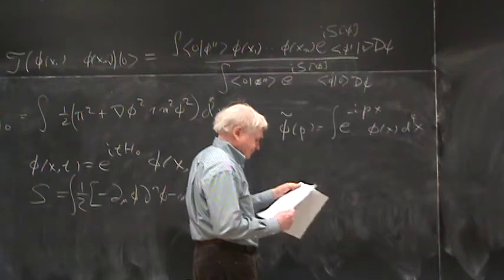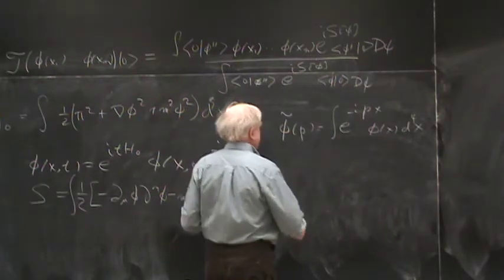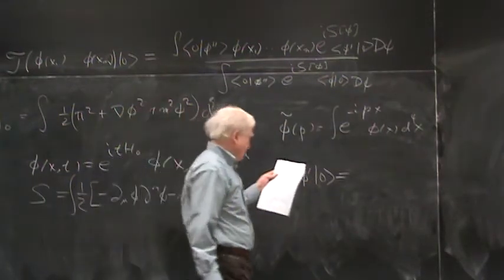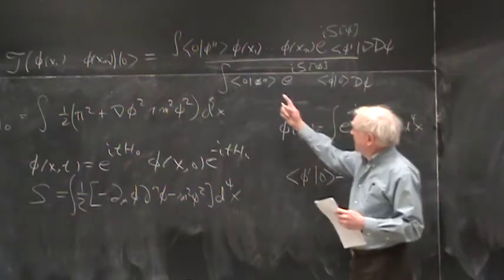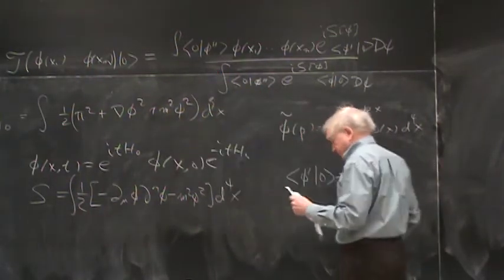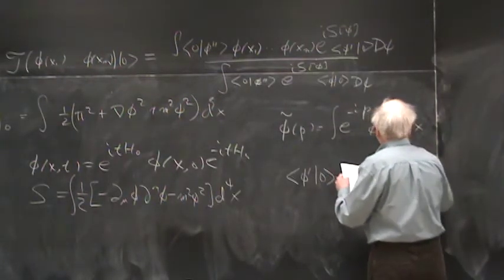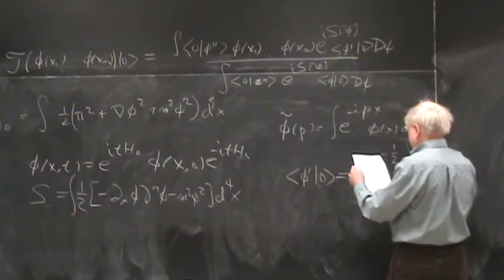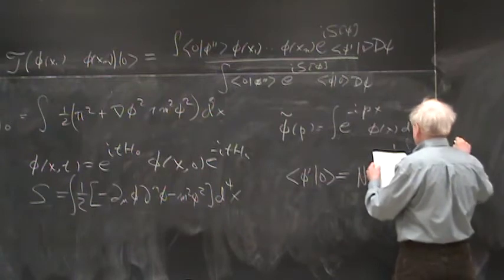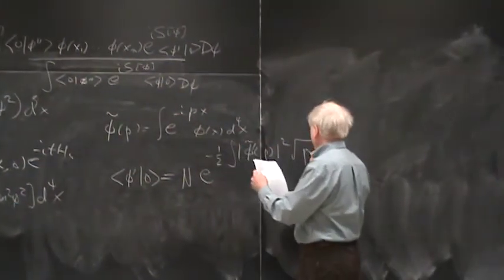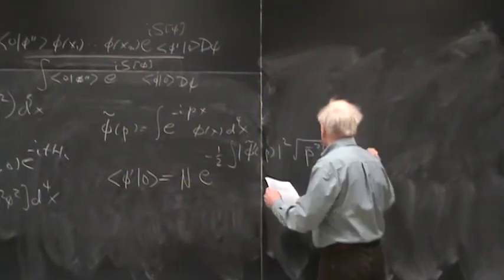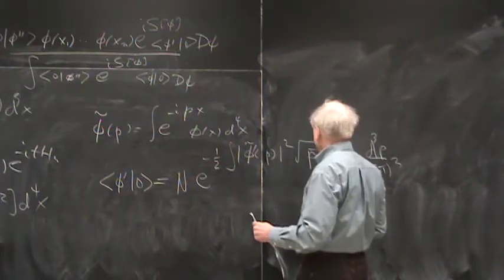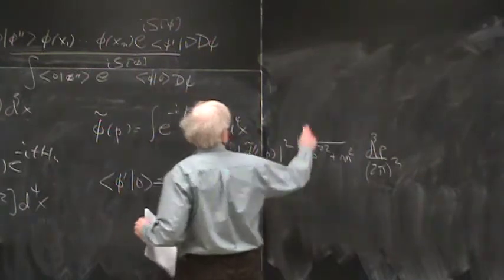What we next did was we made use of something I derived in chapter 16: this matrix element for the theory we can solve is e to the minus one half, an integral. I've got a prime on phi just to say that it's an eigenvalue, not a field operator. So this is phi prime tilde of p, absolute value squared, times an energy term: p squared plus m squared, d cubed p over (2 pi)^3. What does it mean that we can solve the theory? It means we can write down this expression.